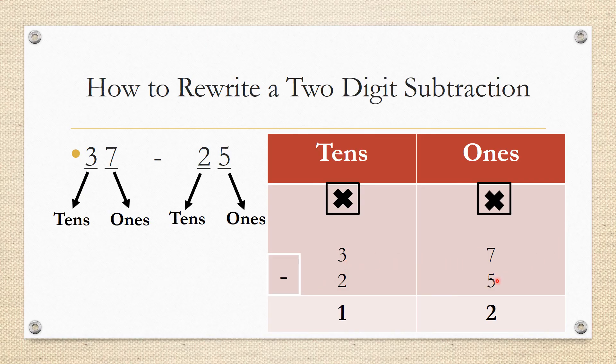Now 7 minus 5. As we said, we will subtract the ones first. I have 7 minus 5, can I do that? Yes, because 7 is bigger than 5. So 7 minus 5 is equal to 2. Do I have to regroup here? No, so no regrouping.